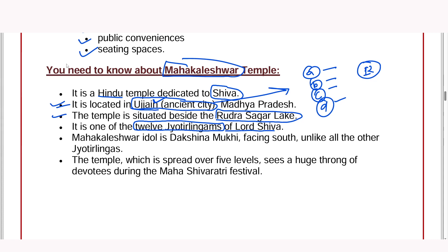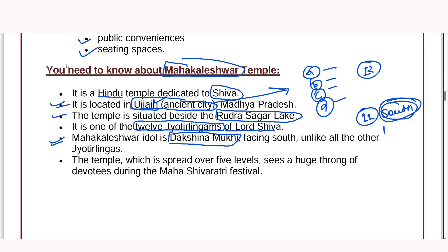There are 12 Jyotirlingas in India. We have discussed Kedarnath and Vishwanath in the four dhams — Kedarnath and Rameshwar. Most Hindu temples never face south. But temples that are facing south are considered very important for tantric kriya.